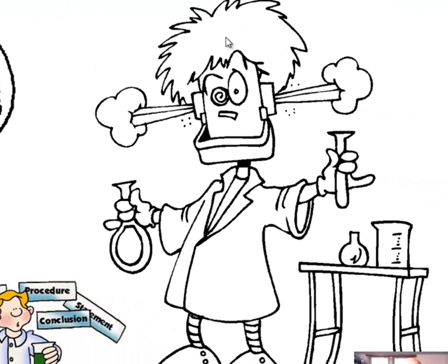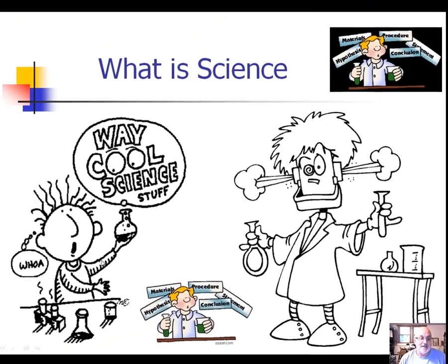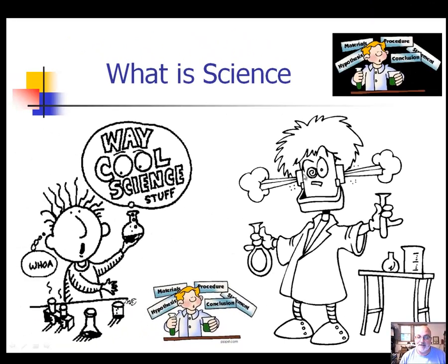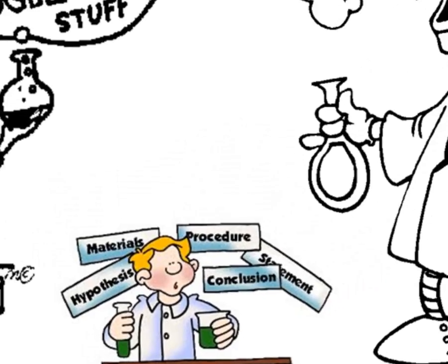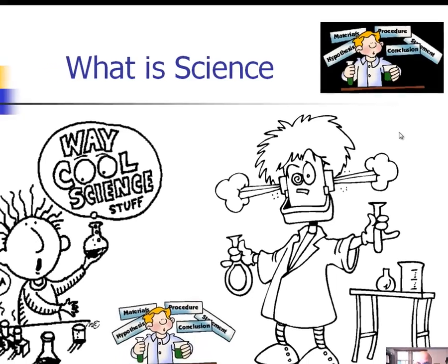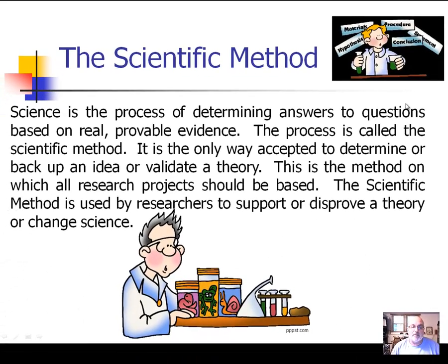We are going to do some experimentation this year. We're going to try to stay away from what this individual is doing right here — he's probably not playing the safest science procedures possible, but we do have to think about him as being a robot and maybe this is just the way he gets excited about science. Science is a process of determining answers to questions based on real, provable evidence. This is a process that you've done your entire life.